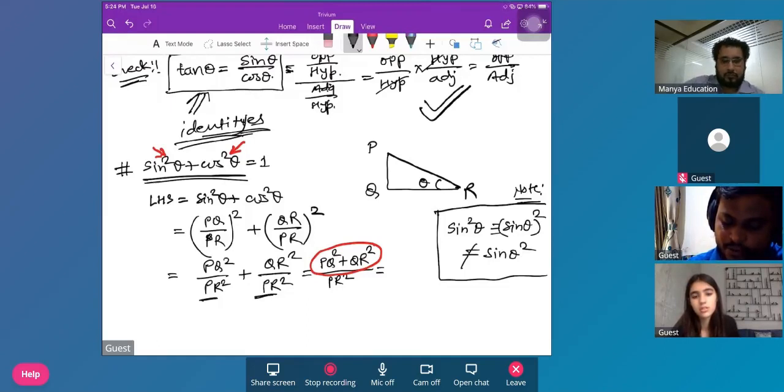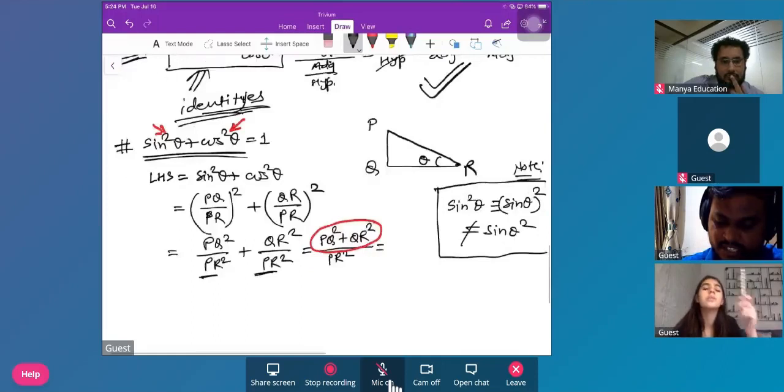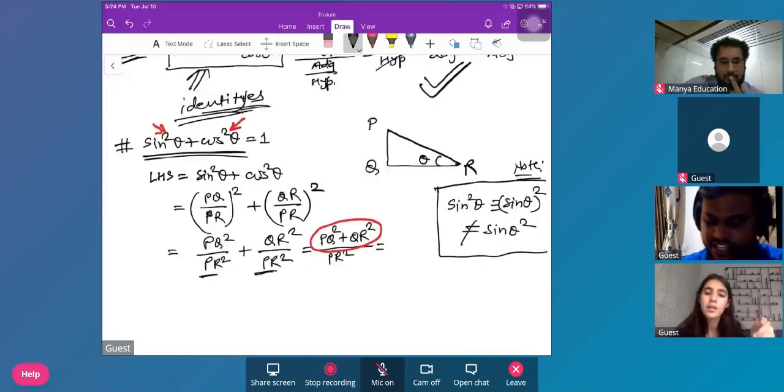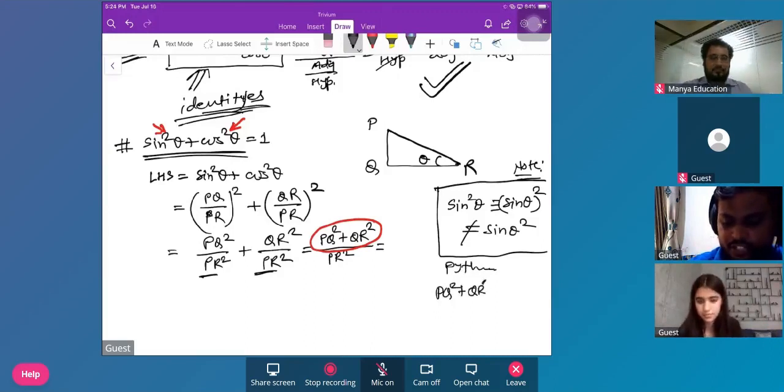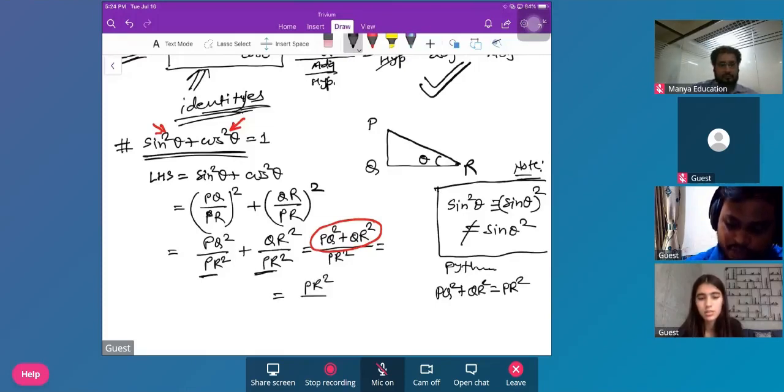What would it... oh, PQ squared plus... you just raised the word. Isn't it equal to PR squared? It's like... yeah, yeah, Pythagoras theorem. By using Pythagoras theorem, PQ squared plus QR squared is equal to PR squared. Okay, so this would be PR squared.